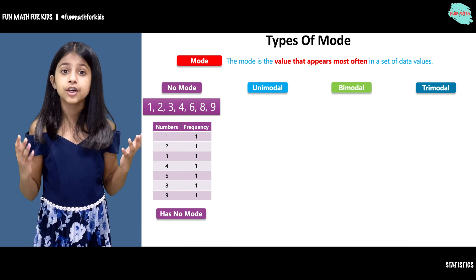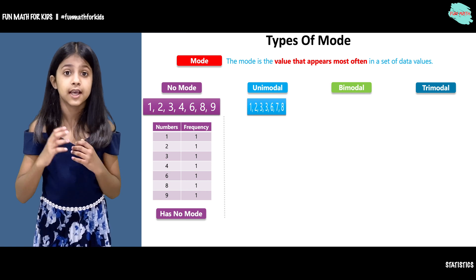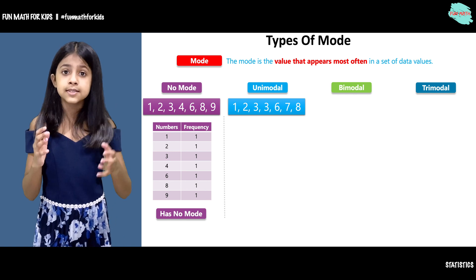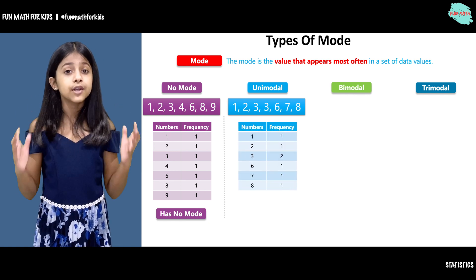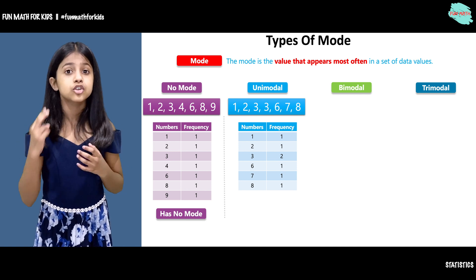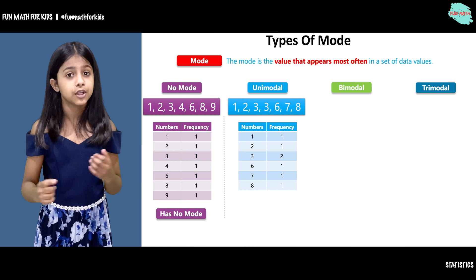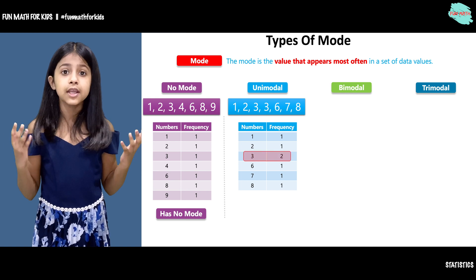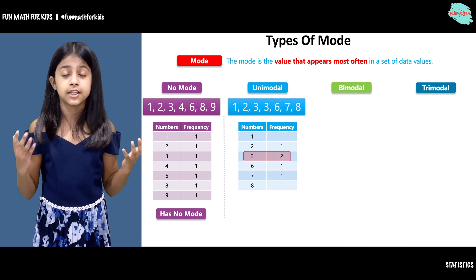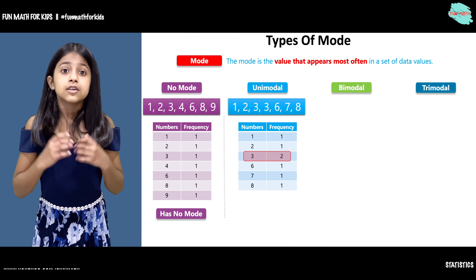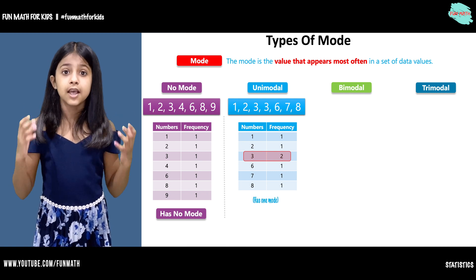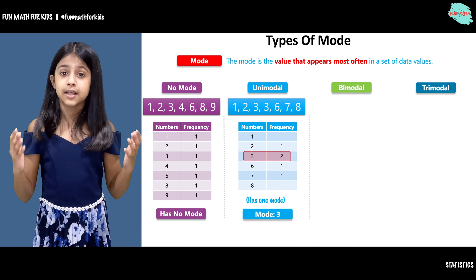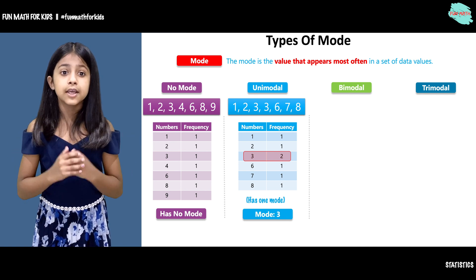Now let's move on and talk about unimodal. Here we have a data set with numbers 1, 2, 3, 3, 6, 7, and 8. Here we have a frequency table. 3 has occurred twice and all the other numbers have appeared only once. So what is the mode here? The mode is 3, because 3 is the value that appears most often in the data set. That is why this data set has one mode, and that is 3. Since this data set has one mode, it is called unimodal.